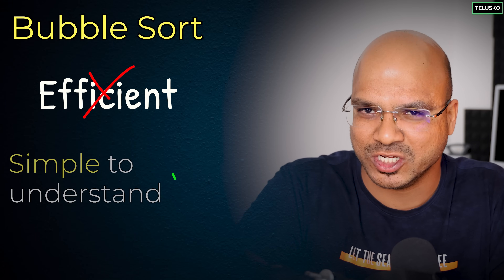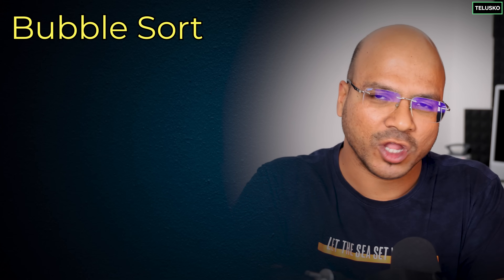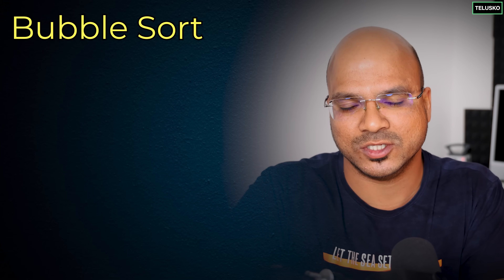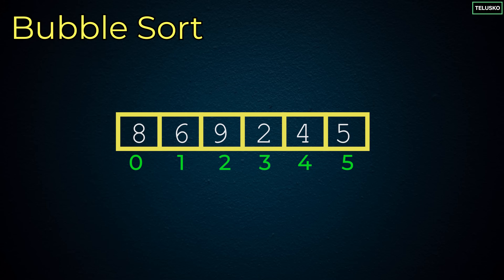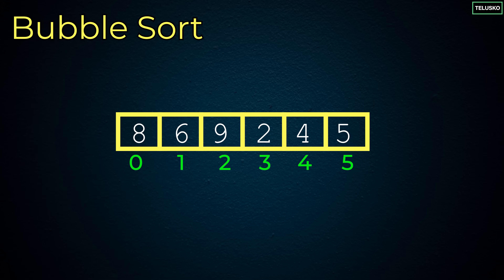Bubble sort is not efficient but it is simple to understand, so that gives us a starting point. When we talk about bubble sort — why do we use it? Let's say you want to sort different elements. We have a list: 8, 6, 9, 2, 4, 5. If you want to sort them, we don't have a magical way to instantly find the order. What you do is use an algorithm like bubble sort.